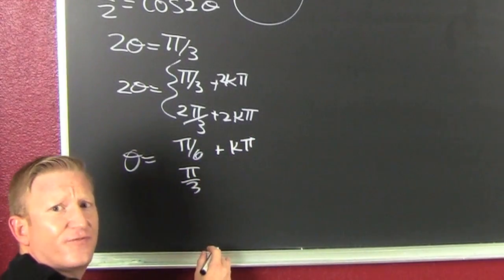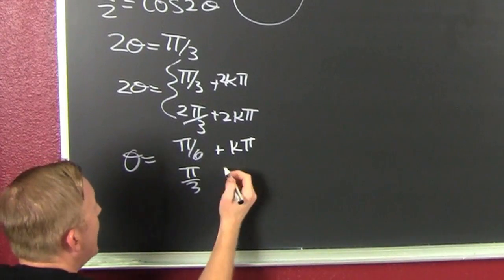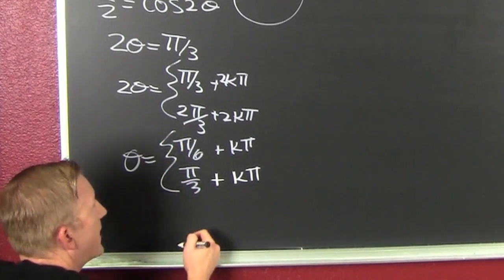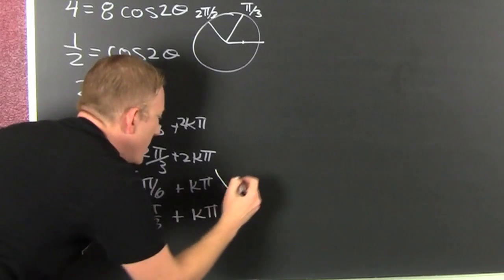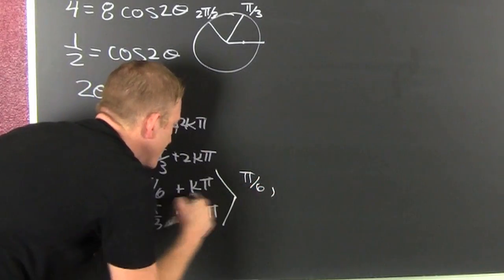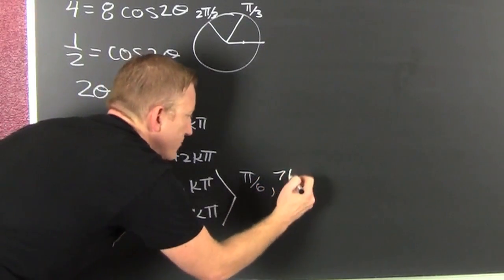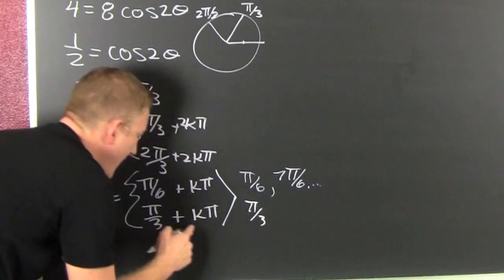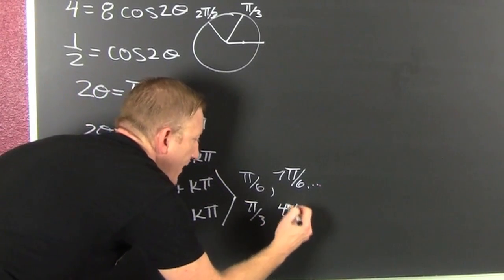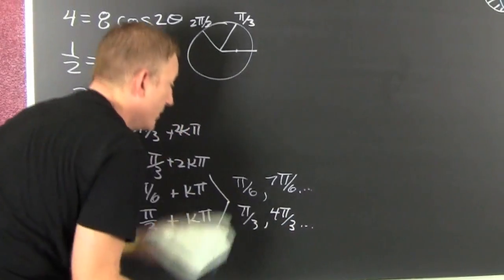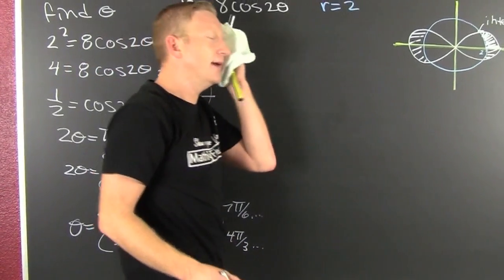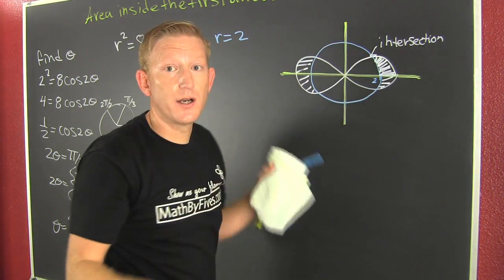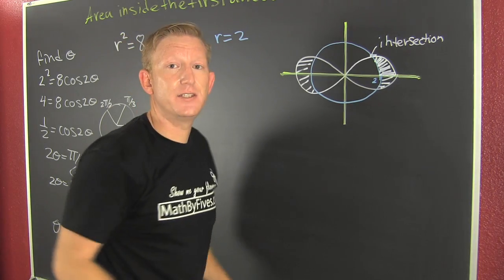Solving those trig equations finally comes in handy. Cranking those out to find all the points of intersection: theta equals pi over 6, and adding pi gives 7 pi over 6; and theta equals pi over 3, adding pi gives 4 pi over 3 — and it keeps going. That gives us four intersection points total.